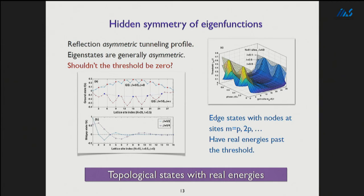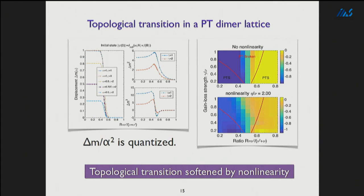The reason this happens is a hidden symmetry: even though wave functions are not symmetric site-by-site, at every p-th site they are symmetric, where p is the period. We can understand why states with nodes at the gain and loss sites — the x states — do not contribute to PT breaking. Above the threshold, the states that have come together and broken PT symmetry are not these x states; they do not couple to this potential and continue to have real energies. They are robust in this sense.